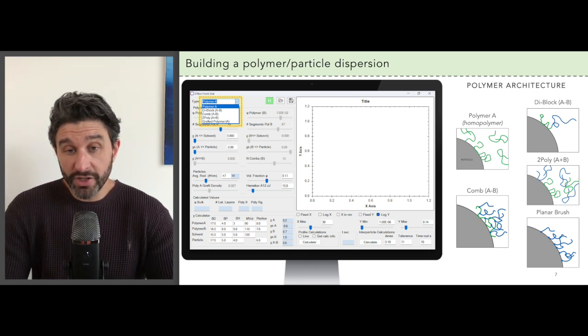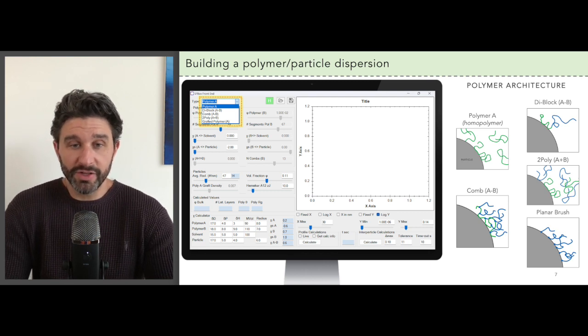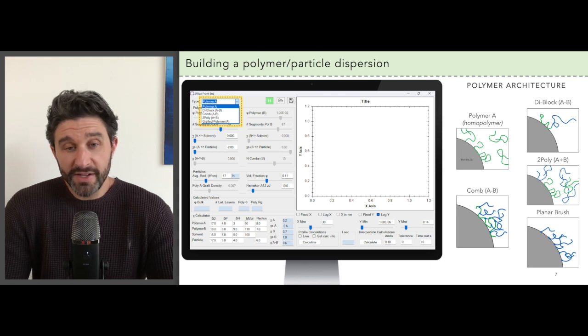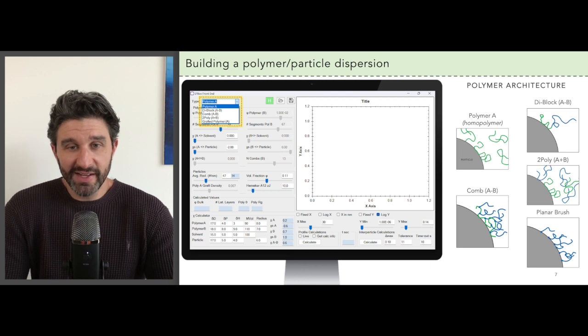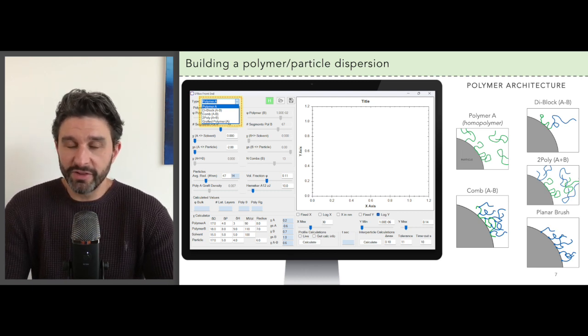There's also the option for a comb polymer or a two polymer system, which is actually a blend of two different polymers within the solvent around the particles. Finally you have a grafted polymer, aka a polymer brush, and this is when the polymers are actually tethered chemically and permanently to the surface of the particles.